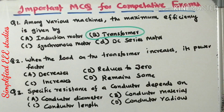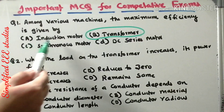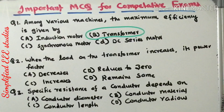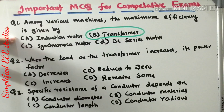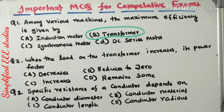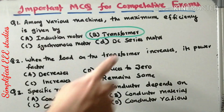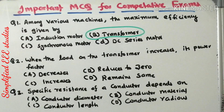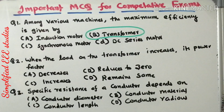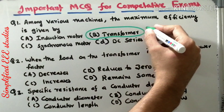From this question you can generate multiple questions. For example, one device is known as the rotating transformer — that is the induction motor. It follows the same principle as a transformer but has rotational parts, stator as well as rotor, obeying Faraday's law of electromagnetic induction. One more question: one motor is known as the variable speed motor — that is the DC series motor. And one motor known as the constant speed motor — that is the synchronous motor. The right answer for the original question is transformer.